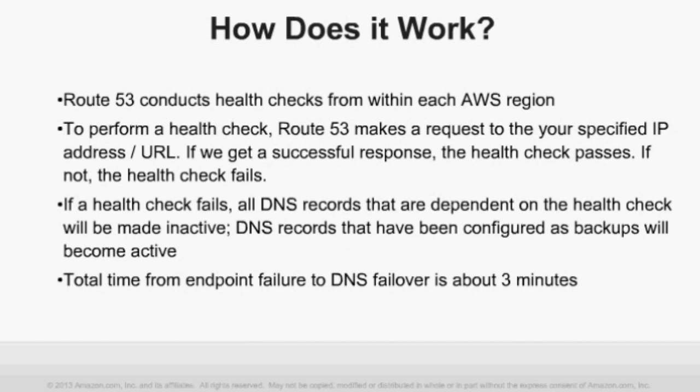Previously, customers had to make DNS changes manually in response to failure — someone would get paged, then go make DNS configuration changes, which could take many minutes or even hours. DNS Failover, once configured up front, is completely automatic from detecting the failure to rerouting traffic to your backup location. From the time the endpoint fails to traffic flowing to the backup site is about three minutes, including detection time and DNS propagation across the Internet — a huge improvement over what customers were managing themselves.